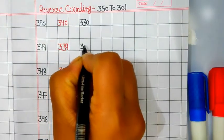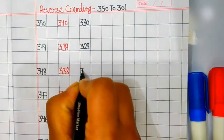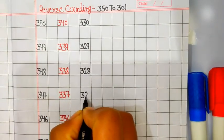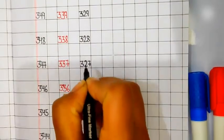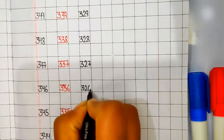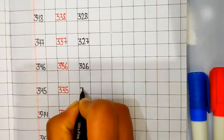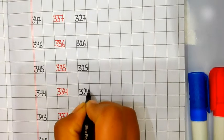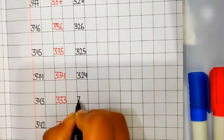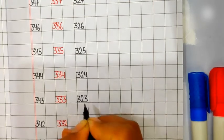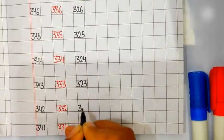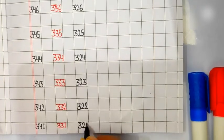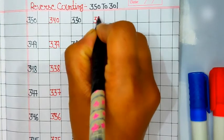329, 328, 327, 326, 325, 324, 323, 322, 321, 320.